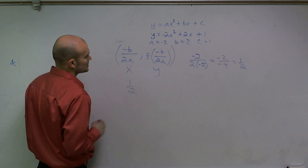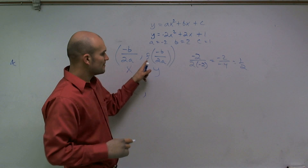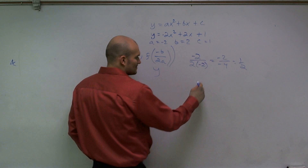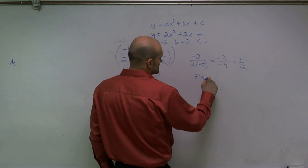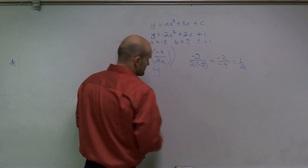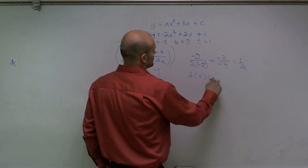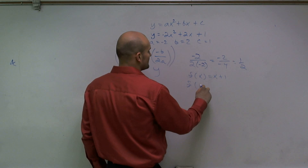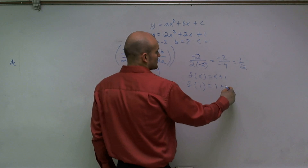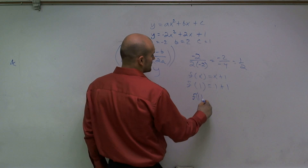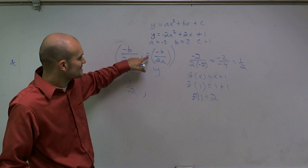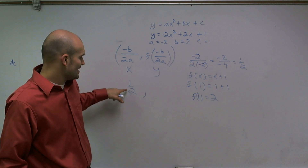So my first coordinate is 1 half. Then we have f of that coordinate — this is just rewritten as f of that value. That's the same thing as, for example, if I had f of x equals x plus 1 and I said find f of 1, you'd plug in 1 for x and get f of 1 equals 2. It's the same thing here — my value is 1 half.